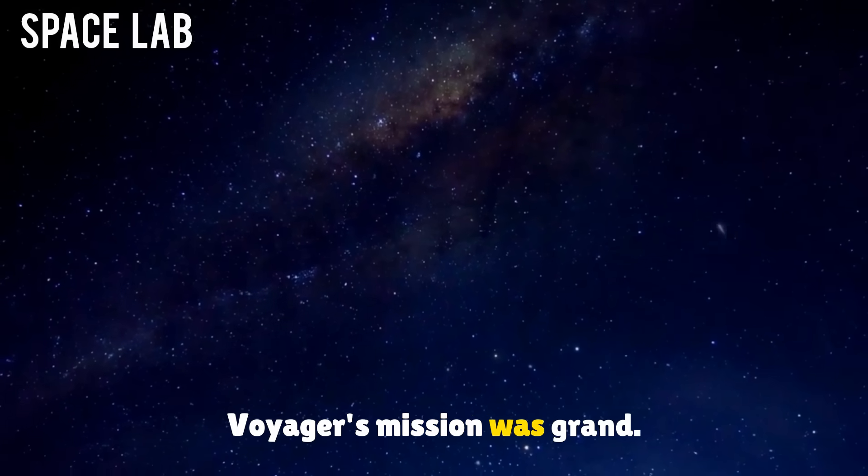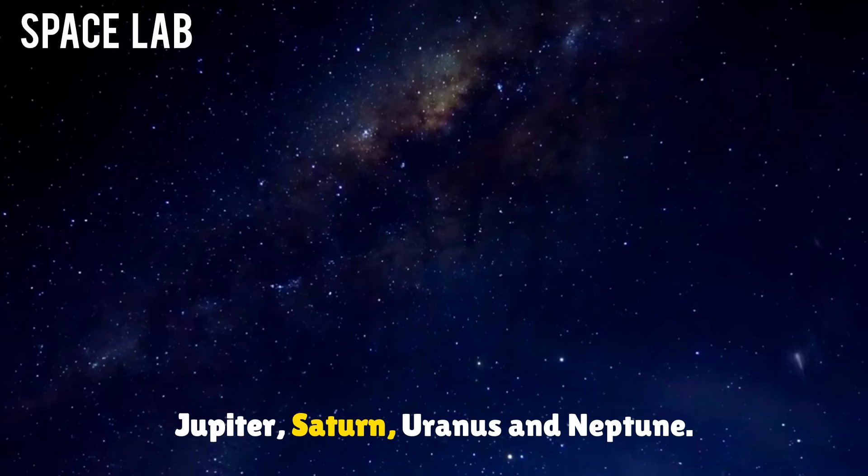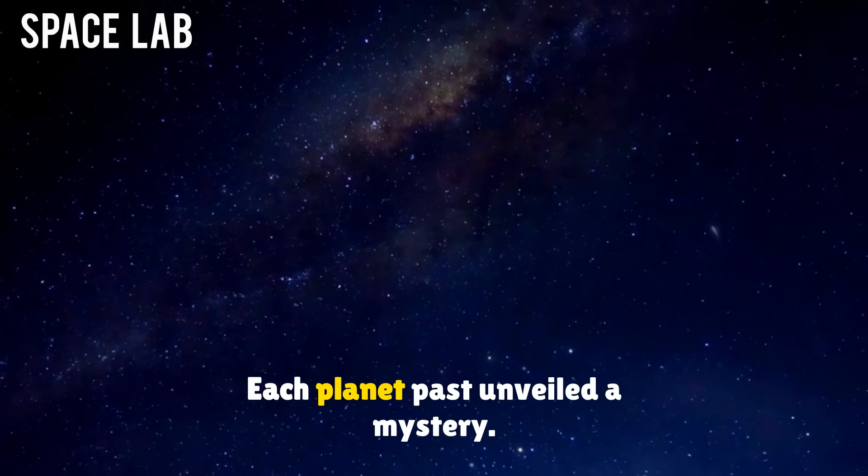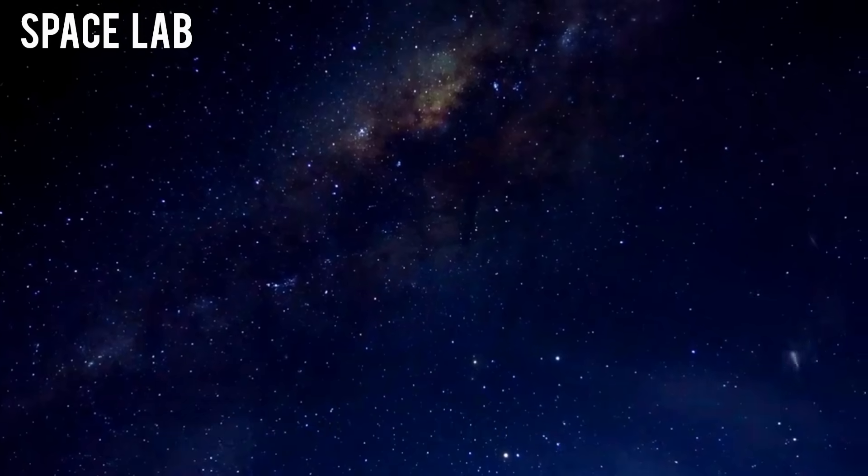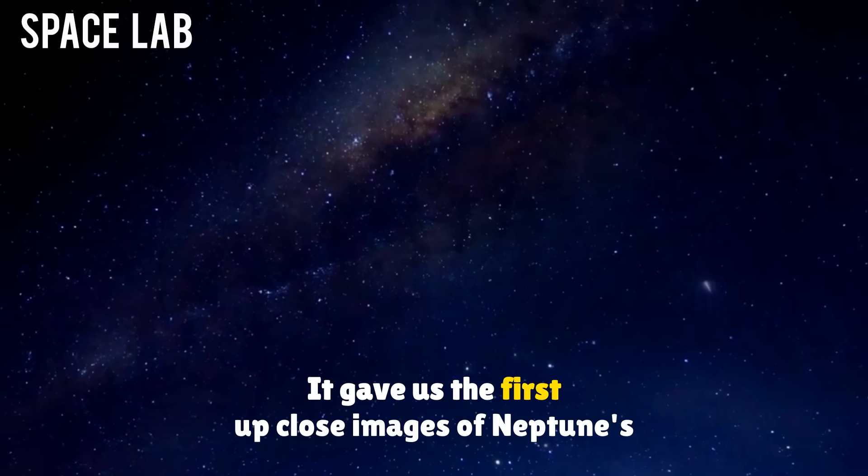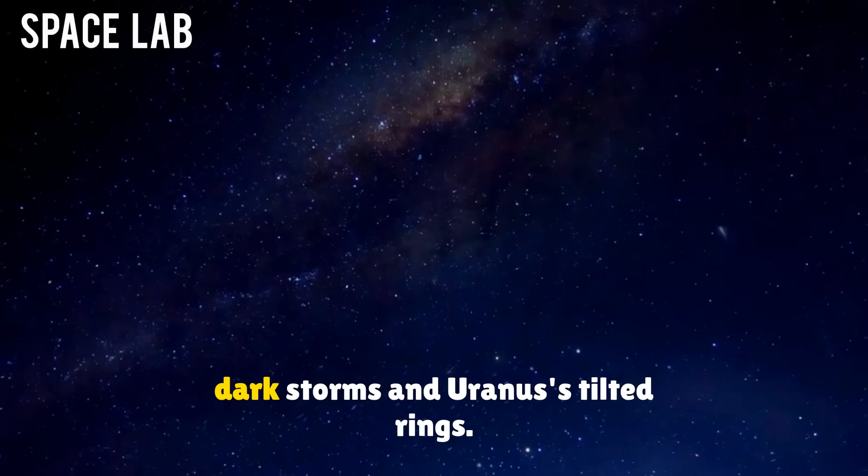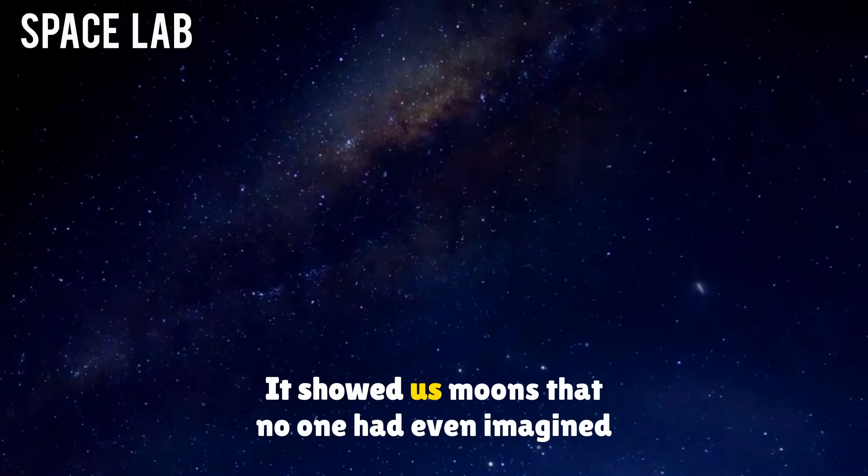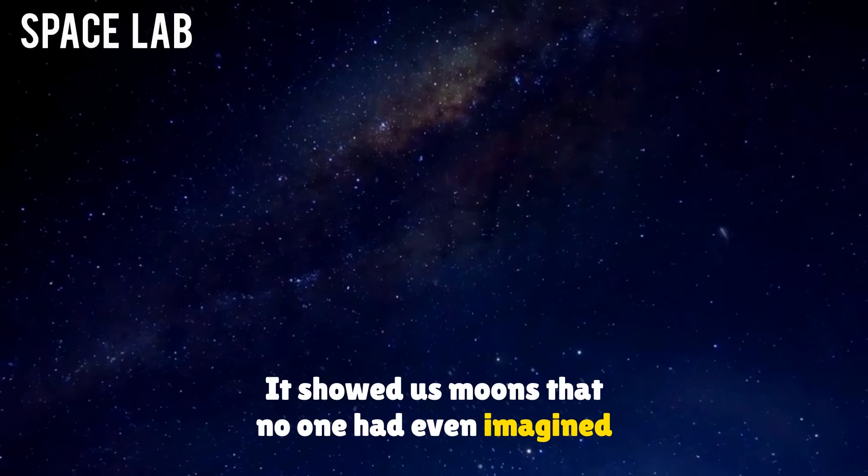Voyager's mission was grand. Jupiter, Saturn, Uranus, and Neptune. Each planet unveiled a mystery. It gave us the first up-close images of Neptune's dark storms and Uranus's tilted rings. It showed us moons that no one had even imagined could exist.